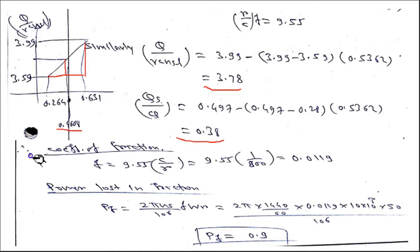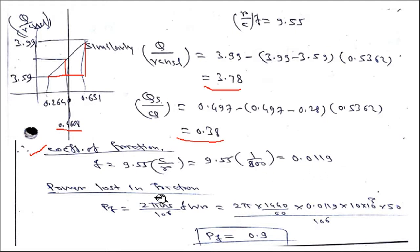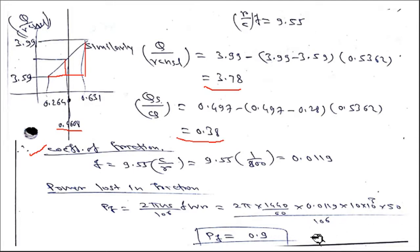With r/c·f = 9.55, the coefficient of friction is f = 9.55 × (c/r) = 9.55 / 800 = 0.01194. Power lost in friction is calculated using Pf = 2π × Ns × f × W × r / 10⁶, substituting Ns = 1440/60, f, W = 10000 N, and r = 50 mm, giving Pf = 0.9 kW.